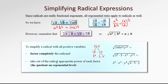The next step is to take out of the radical the appropriate power of each factor. For example, if we see 2 to the 5, we can perform division on the exponential level: 5 divided by this invisible index 2. 5 divided by 2 is 2 remainder 1. So we write 2 to the exponent 2 — that's the quotient from the division — outside of the radical. The remainder is 1, and that needs to stay under the radical.